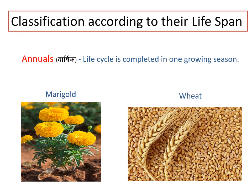Have you noticed that some plants have a very short life? That is why we have to plant them often, every year. While some plants are there for many years and we don't have to plant them again and again. Let us come to the next criteria — their lifespan. We divide plants depending on how long they live. The first is annuals — plants whose life cycle is completed in one growing season. Examples are rice, pea, beans, and marigold. Every year we have to sow the seeds.